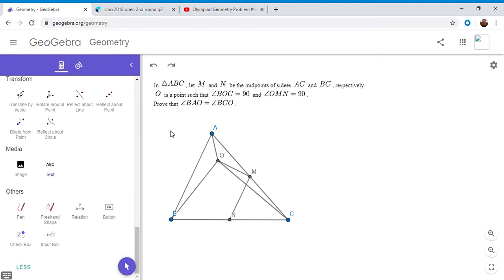And one way that we might want to show those angles are equal is to try to make those circles overlap.